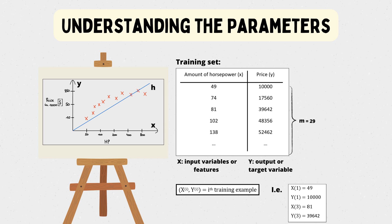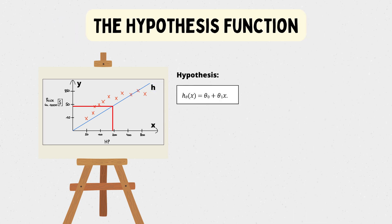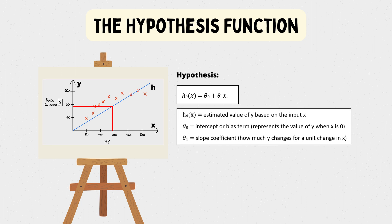Lastly we have our hypothesis function, which maps x to y. It's our learning algorithm, and for linear regression, it takes this form. It's essentially the equation that represents our linear regression model. H of x is our prediction, the estimated value of y based on the input x and our model parameters.